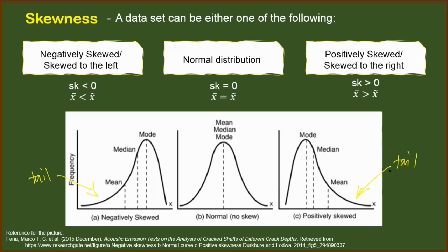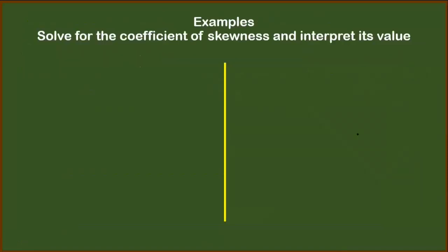The position of the tail tells us to what direction that distribution is skewed. If the tail is found on the left side, therefore that is skewed to the left. However, if the tail is on the right side, then the distribution is skewed to the right. So to better understand, let's have the following examples.